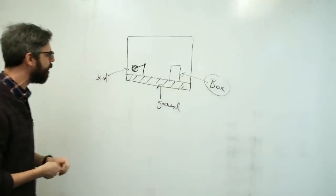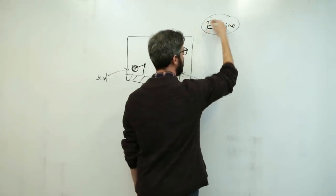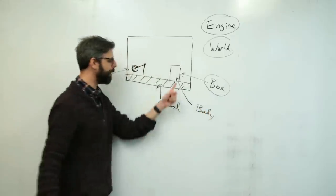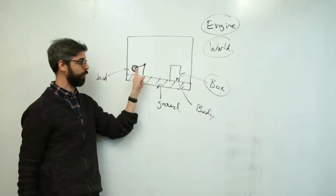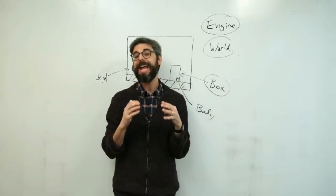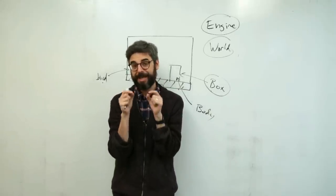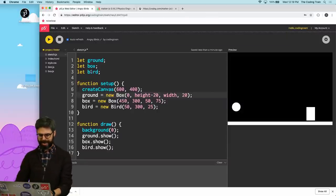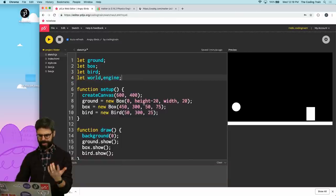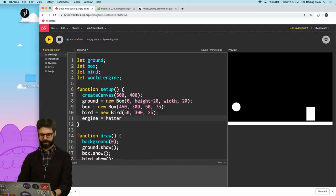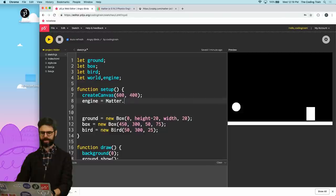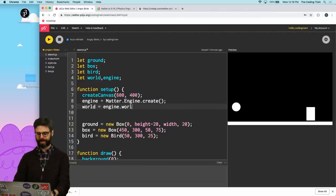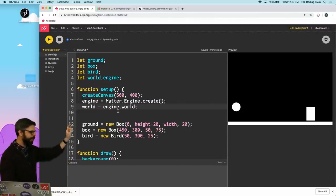I need to establish this idea of an engine object and a world object. The world is talking about the environment, and then each one of these things will be a body — rectangular bodies for the boxes, and a circular body for the bird. My classes box and bird are going to be wrappers that have inside of them a piece of data which refers to the actual matter.js body. I'm going to say engine equals Matter.Engine.create, and then the world is actually created when I create the engine — I can just grab it from the engine.world. So now I have the matter engine and the matter world.